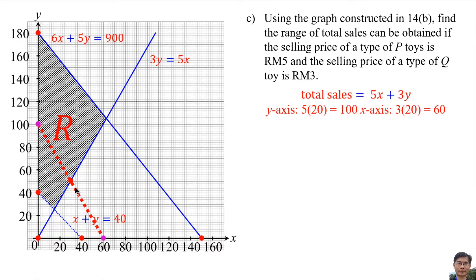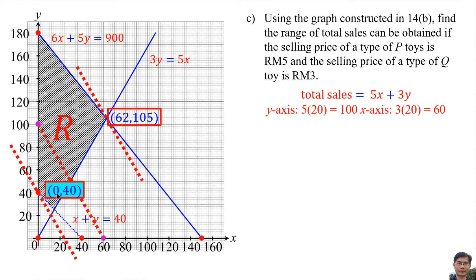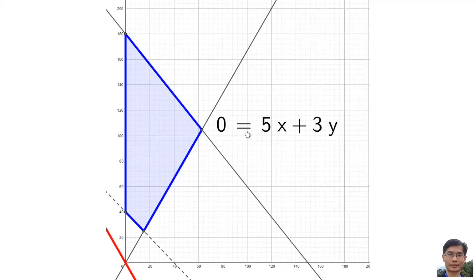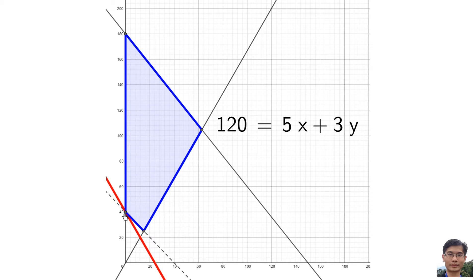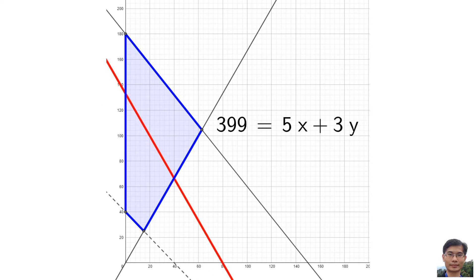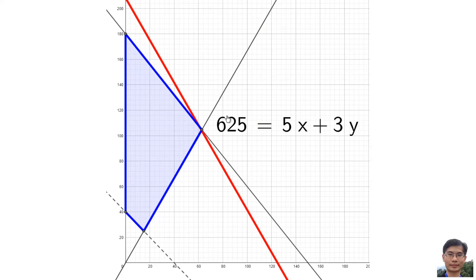Move the line upward until it reaches the furthest point of the shaded region — that point gives the maximum total sales. Then move the line downward to the nearest point of the shaded region — that point gives the minimum total sales. When the line first touches the shaded region moving upward, the minimum total sales is 120.